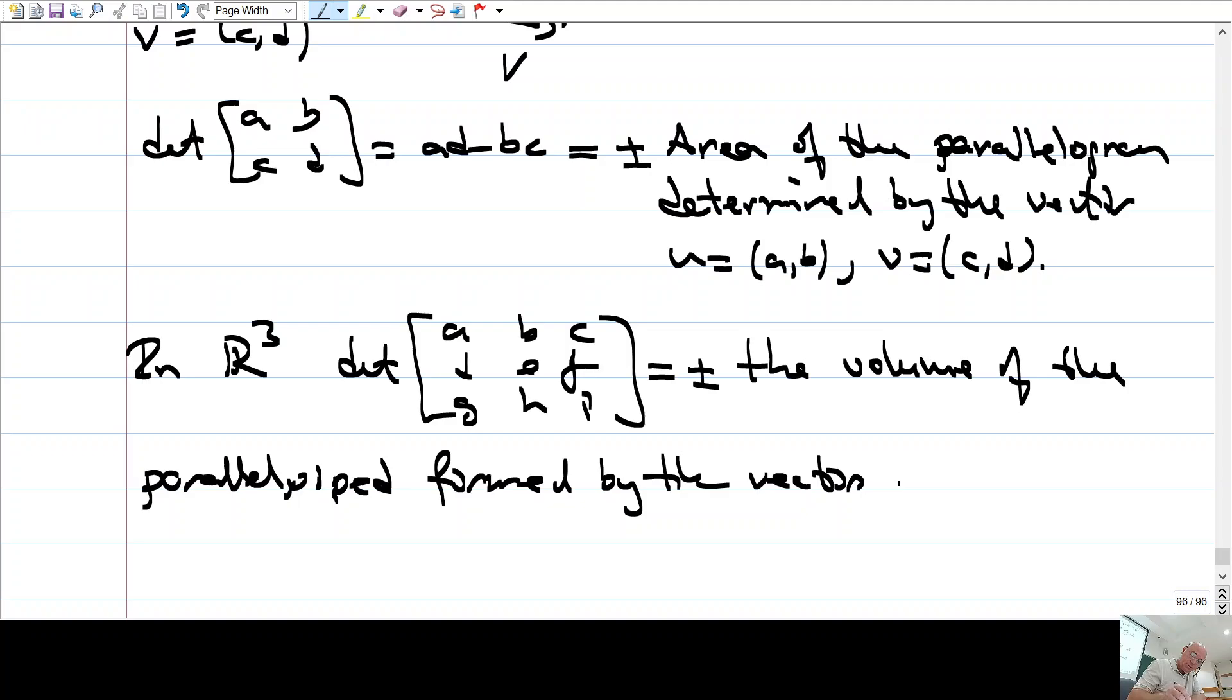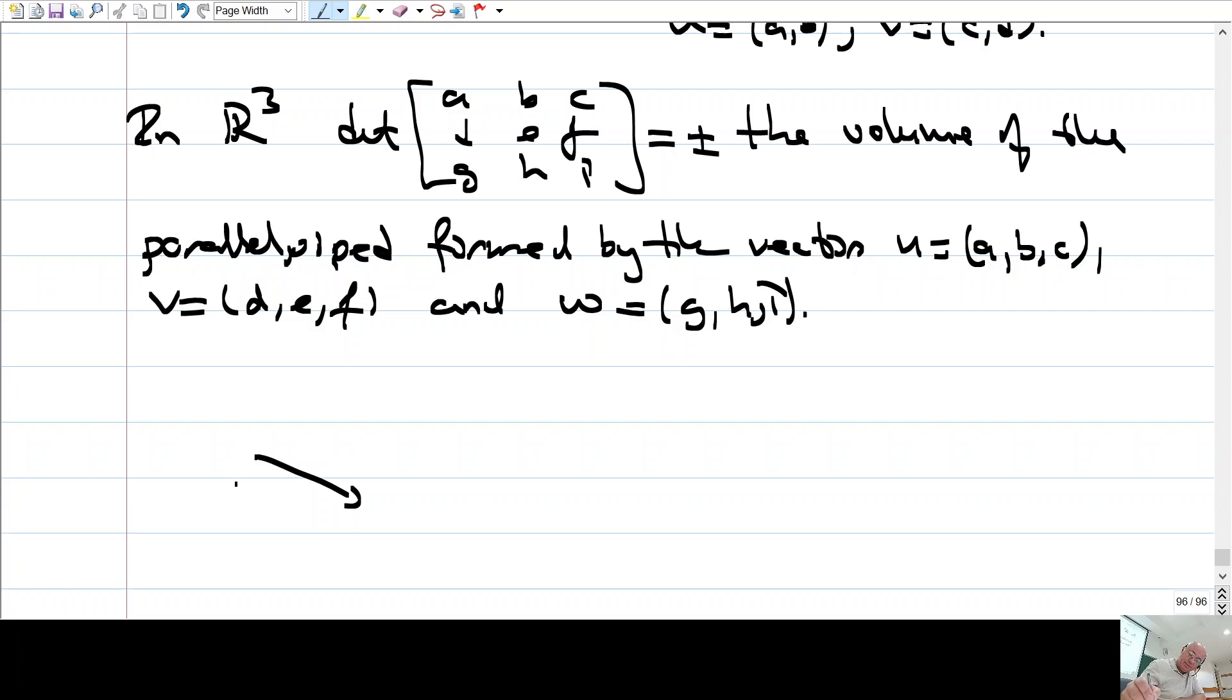Vectors U, let's say, A, E, C, V, D, E, F, and W, G, H, and I. So, let's say, U is here, V is here, and W is something like this, okay? These three vectors form a parallel pipette in R3. What I mean by that is the following. You know, form this first parallelogram, and then you just complete this to a three-dimensional gadget.